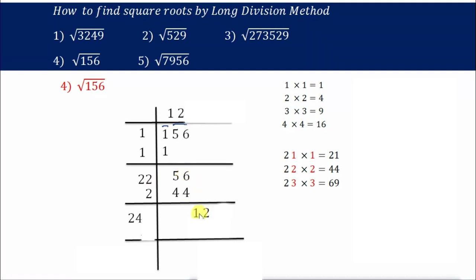Now 12 is less than 24, so division is not possible. What we do next is take a decimal point and put two zeros. Why two zeros? Because here we are dealing in pairs, so we always take zeros in pairs after putting the decimal point. Now we have 1200.